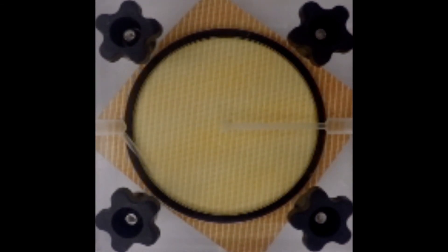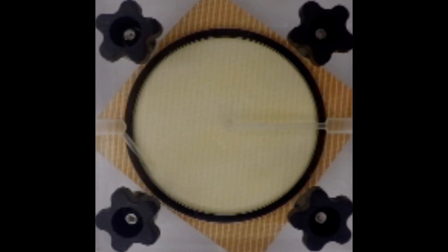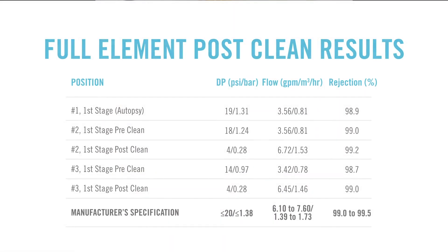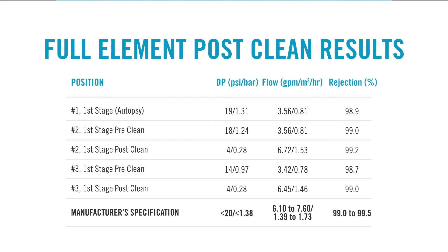This is our first step in cleaner selection. You'll see here a time-lapse video taken over the course of an hour, which shows our product, RoClean P903, removing all of the visual foulant material. This product is now ready to try on the full elements. The site provided us with three elements — we chose one for autopsy and reserved the remaining two for full element cleaning, giving us an opportunity to trial our chosen product on a full element.